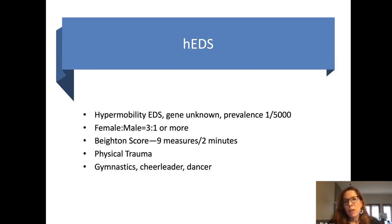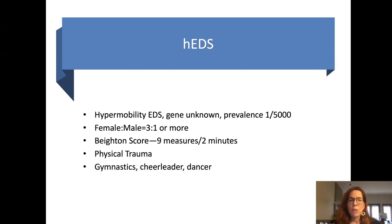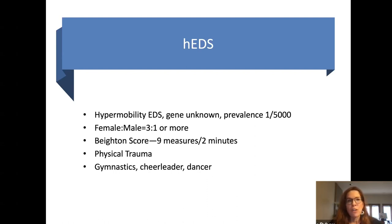There's a higher percentage of females affected. We usually assess it with something called the Beighton score. Many practitioners will do the Beighton score in their office because it's easy to do in about two minutes. But frankly, you can usually pick up hypermobility EDS just based on a patient's history. There's usually a history of physical trauma like concussions and whiplash from motor vehicle accidents, joint pain and joint damage. But because they're hypermobile, they very often give a history of being a great gymnast, cheerleader, dancer, or great athlete overall.